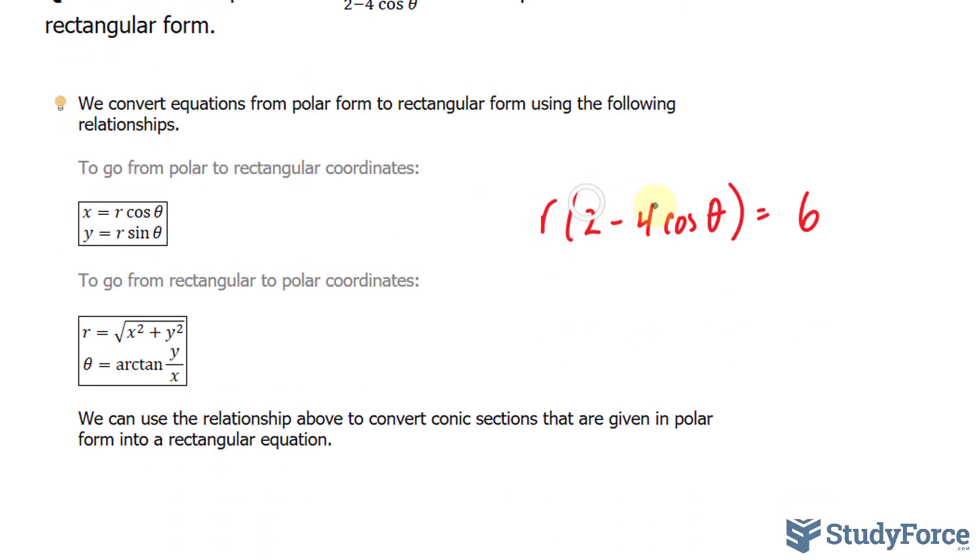I'll first start by multiplying this r into the parentheses where I get 2r minus 4r cosine theta is equal to 6.